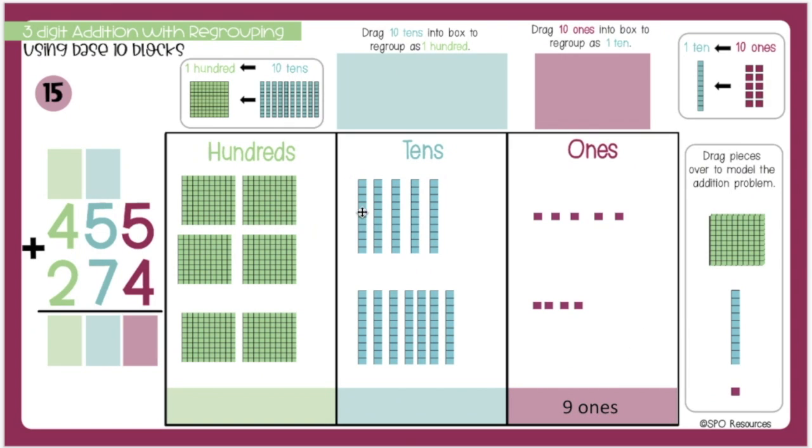In the tens place, I have 1, 2, 3, 4, 5, 6, 7, 8, 9, 10, 11, 12. I have 12 tens, so I will need to move 10 of them up into the box and regroup them as 1 hundred.